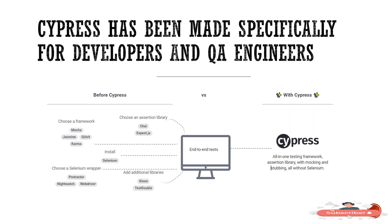Cypress has been made specially for developers and QA engineers. Looking at the diagram, on the left section you can see that for end-to-end testing you need to identify a framework, an assertion library like Chai or Expect.js, a testing tool like Selenium, and Selenium wrappers like Protractor or WebDriver. With Cypress, it is an all-in-one testing framework with assertion libraries, mocking, and stubbing — all without Selenium.